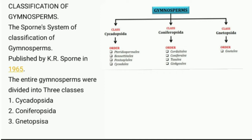As shown in the chart, the class Cycadopsida is divided into four orders: Pteridospermales, Bennettitales, Pentoxylales, and Cycadales. The second class, Coniferopsida, is divided into four orders: Cordaitales, Coniferales, Taxales, and Ginkgoales.